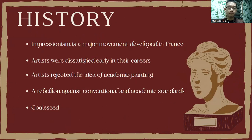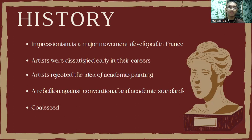The history of Impressionism: it is a major movement developed in France. The artists were dissatisfied early in their careers. Artists rejected the idea of academic painting, and it is a rebellion against conventional and academic standards. Impressionism was a radical art movement that began in the late 1800s, centered primarily around Parisian painters.